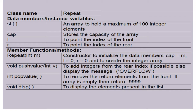Before inserting, check whether the queue is full. If it is full, display overflow; otherwise insert the value into the queue. The next function is 'int pop value', which is used to remove and return the element from the front end one by one. If the array is empty, return the value minus 999 as the default value. Then there is one more function to display the elements present in the queue. These are the data members and member functions available in the class 'repeat'.